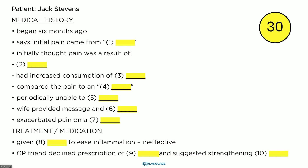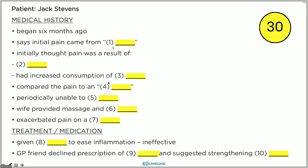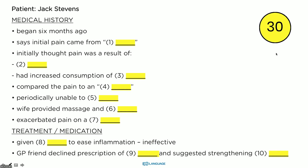Before the audio begins, you get 30 seconds to look, and during this time you should be predicting what type of word you're going to see. Let's do a little bit of prediction. Initial pain came from a place — perhaps something like that. Initially thought pain was a result of — well, it's going to be hard to predict. Had increased consumption of something you eat, perhaps. Compared the pain to an — this is going to be a noun starting with a vowel sound. Periodically unable to verb. Wife provided massage and something related to massage. Exacerbated pain on something. Given something to ease inflammation — probably a medication. GP friend declined prescription of something and suggested strengthening something. Here's 30 seconds for you to look at it.